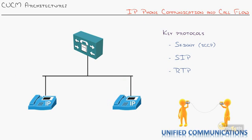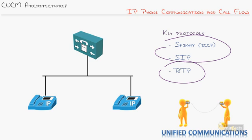So now you know how the call manager interacts with phones. You've seen key protocols like Skinny and SIP used for signaling, and RTP for audio. You've seen how the call flow works — phones talk to the call manager first, then communicate directly via audio so as not to bog down the call manager. I hope this has been informative for you, and I'd like to thank you for viewing.